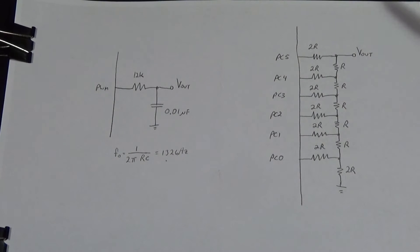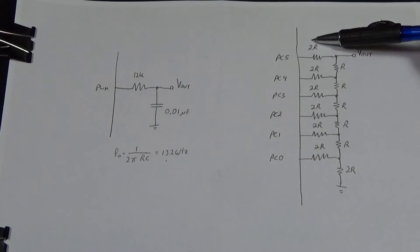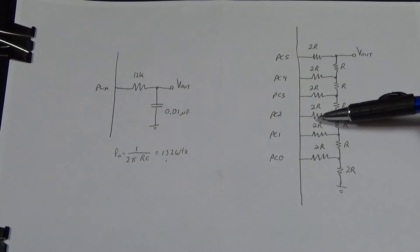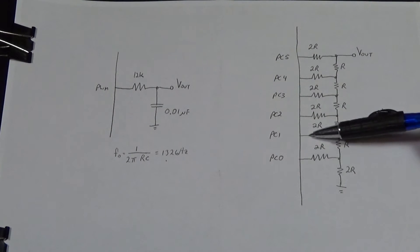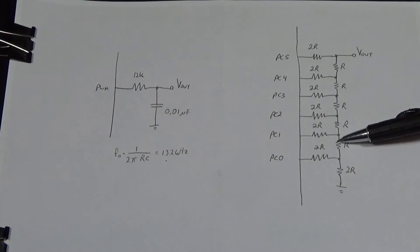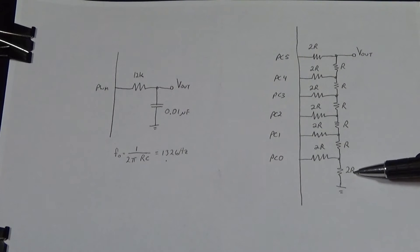And the way this ladder is made up is you've got a value of resistor here R and this resistor here is twice that. So in my case I'm using 22k ohms here and 11k ohms here and you'll see how the ladder alternates so all of the outputs from the microcontroller go through a 22k ohm resistor and there's an 11k ohm resistor between the outputs except for this one here at the bottom which is 22k.